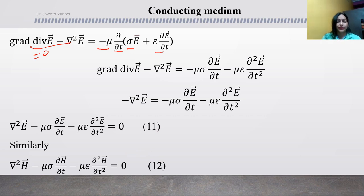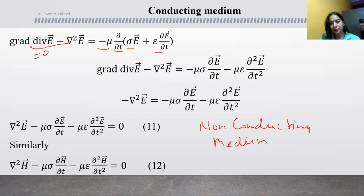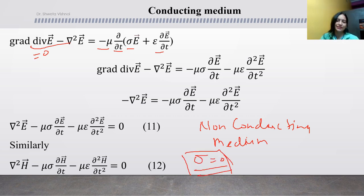Now we can reduce these equations for a non-conducting medium. As you know, the non-conducting case is a shortcut. What happens in the non-conducting medium? Epsilon and mu are the permittivity and permeability, but sigma equals 0 in the non-conducting medium, and the volume charge density is also 0.